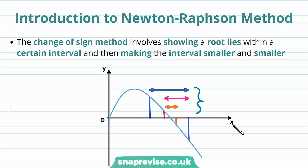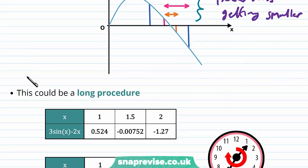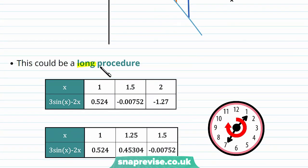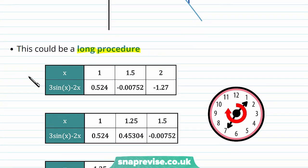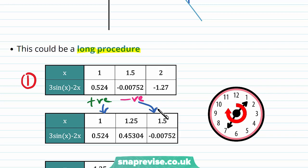So what exactly is the Newton-Raphson method? The change of sign method involves showing a root lies within a certain interval and then making the interval smaller and smaller to get the root to whatever desired accuracy we wish. This diagram shows the change of sign method with the intervals getting smaller. However, this could be a long procedure. Our first iteration having endpoints of 1 and 2 and a midpoint of 1.5 gives us this as positive and this as negative, which gives us our new endpoints 1 and 1.5.